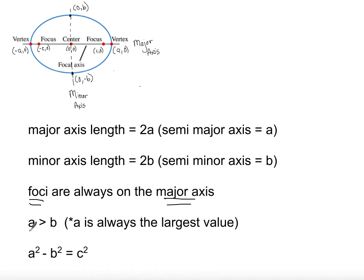The A value is always bigger than the B value. This makes sense because if A and B were the same — if it was the same distance horizontally as vertically — we would just end up with a circle instead of an ellipse. So the A value always has to be bigger. Another relationship is what we call the Pythagorean relation for ellipses: A squared minus B squared equals C squared. It looks like the Pythagorean theorem except we have subtraction instead of addition.